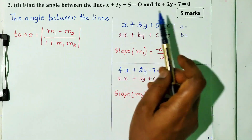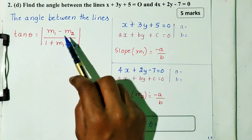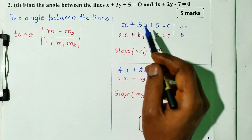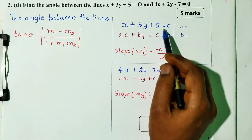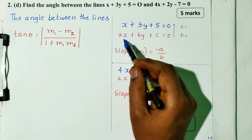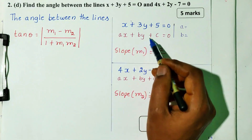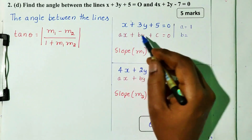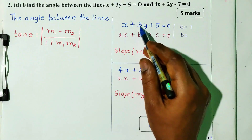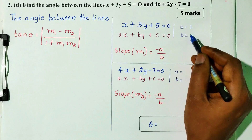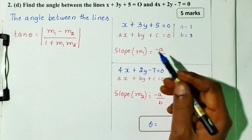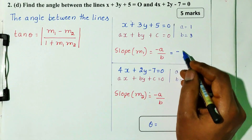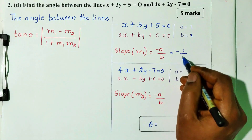This is the formula. If we have 2 lines, the first equation is x plus 3y plus 5 equals 0. Comparing with the general equation ax plus by plus c equals 0, a equals 1 and b equals 3. So slope m1 equals minus a divided by b, which is minus 1 divided by 3.